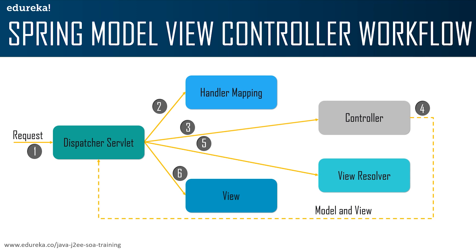When a request is sent to the dispatcher servlet, it is forwarded to handler mapping, then to the controller, then to the view resolver, and finally to the view. The controller processes the request internally and sends back a model and a view to the dispatcher servlet. The dispatcher servlet then sends the view to the view resolver, where it gets resolved and presented as a view. Basically, incoming requests are intercepted by the dispatcher servlet, which gets handler mapping entries from the XML file, forwards the request to the controller, receives a Model and View object back, checks the view resolver entry in the XML file, and invokes the specified view component.